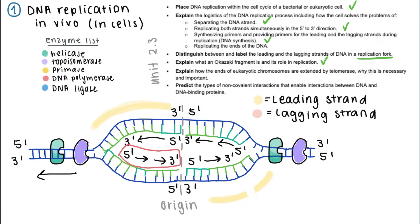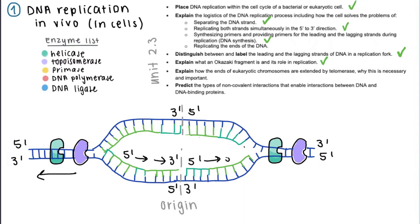For the lagging strand you just recognize which newly synthesized strand is moving opposite to the helicase in its replication fork. Now we already covered the learning objective about labeling leading and lagging strand in replication forks.